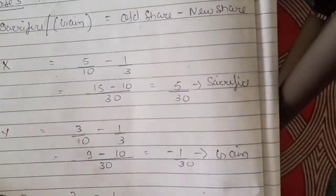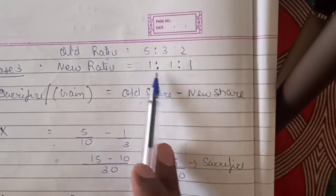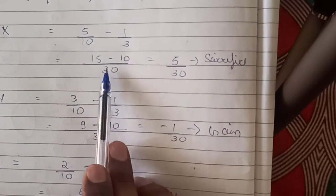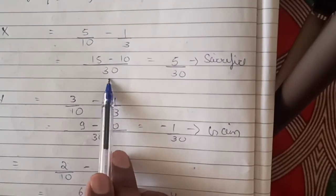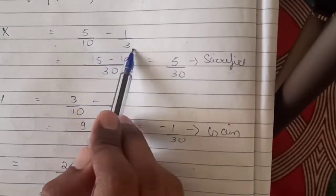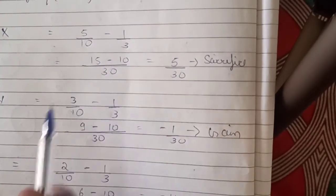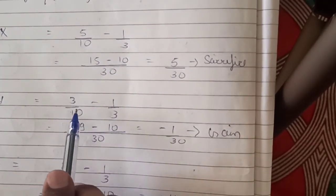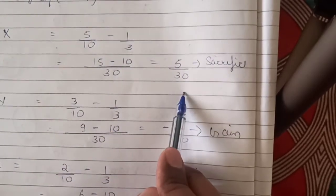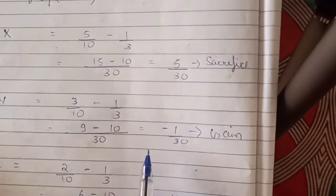For X: old share was 5/10, new share is 1/3. We subtract: 5/10 − 1/3. Taking LCM as 30: 15/30 − 10/30 = 5/30. The answer is positive, so it is a sacrifice.